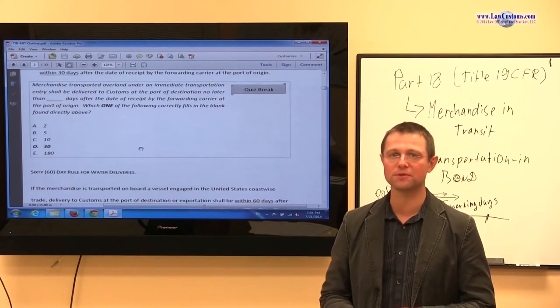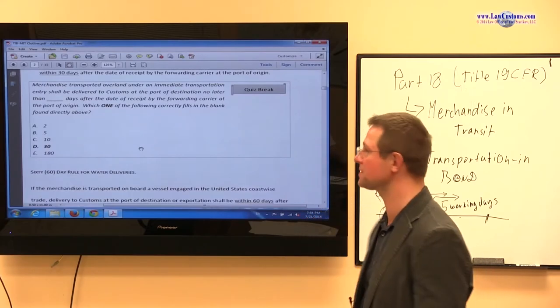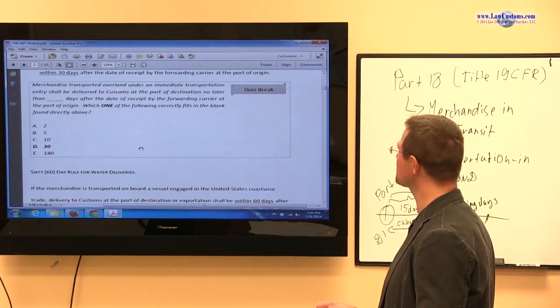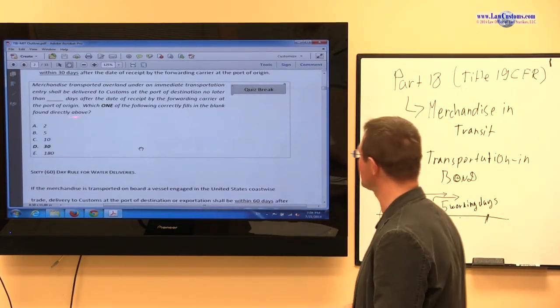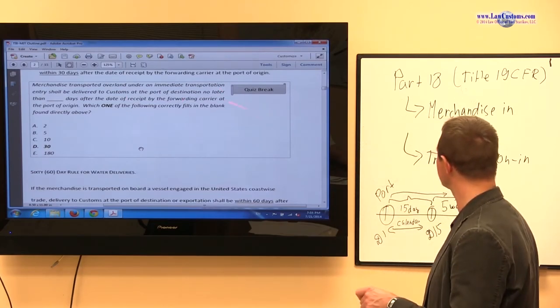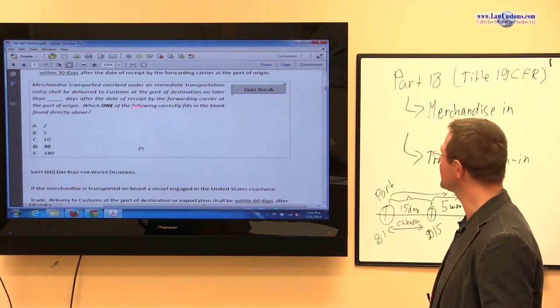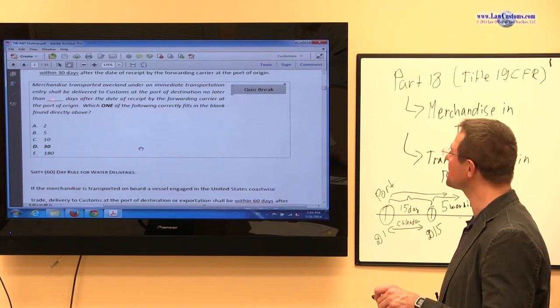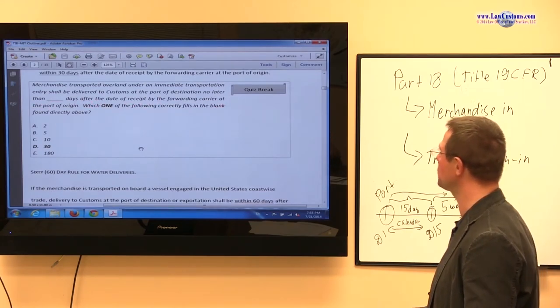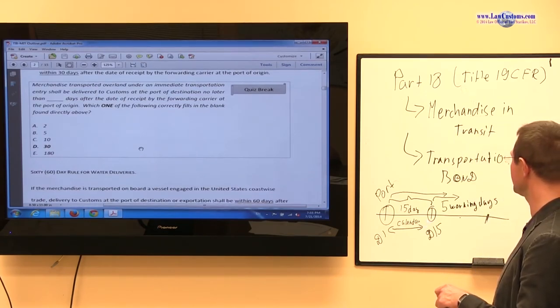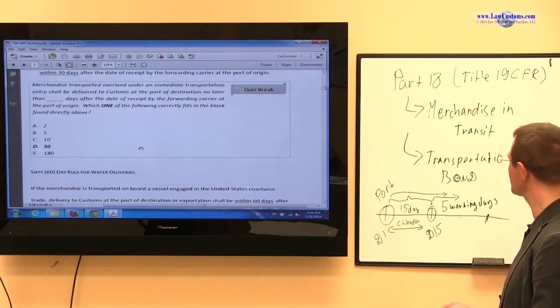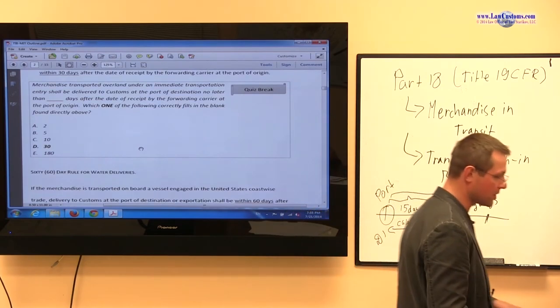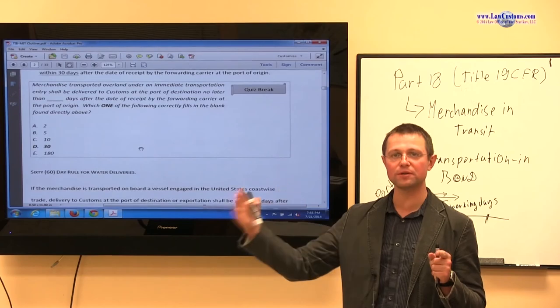It's an important date because customs examiners test you on this. They test your knowledge directly on those days. They say which one of the following correctly fills in the blank about merchandise transported overland, such as LA to New York route, immediate transportation. It's one of the types of entries covered by transportation inbound. How many days? No later than blank days after the date of receipt of the forwarding carrier to the port of origin. The receipt must be taken within five working days after the entry, after the transportation entry. So what do we have? Thirty days. Five days is for the carrier receipt, thirty days for that carrier to get to the port of final destination.